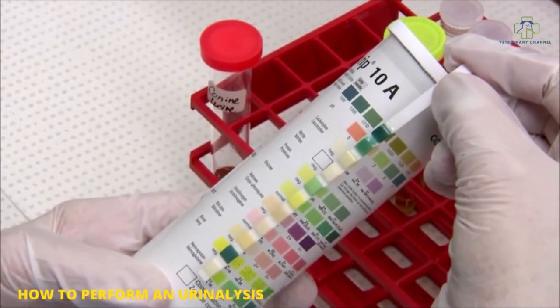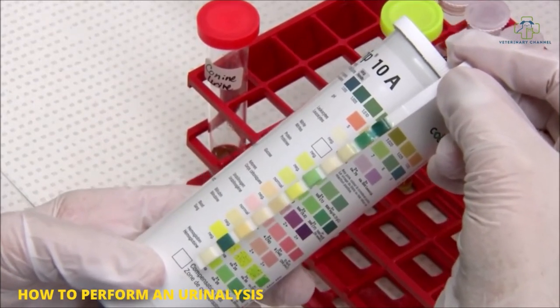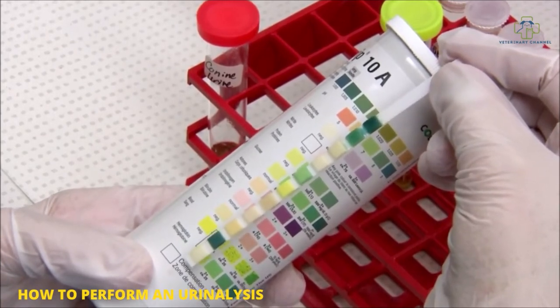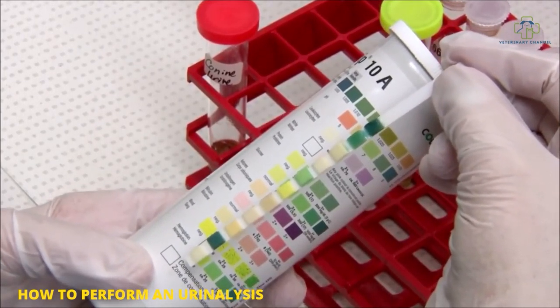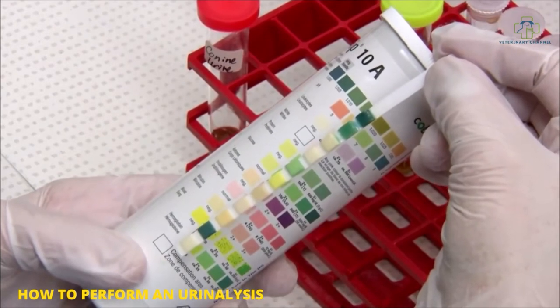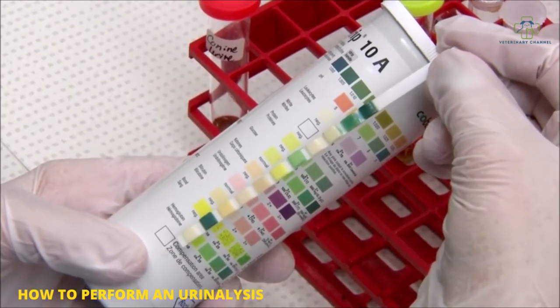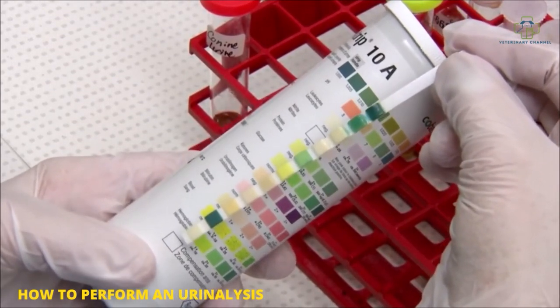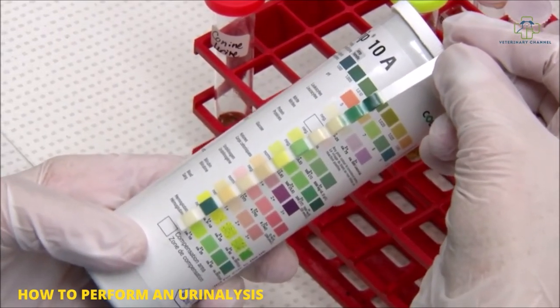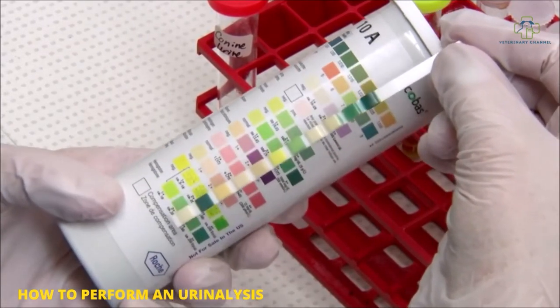We do the pH and report it as intervals of 0.5. Leukocytes is not considered significant in veterinary medicine, so we don't report that. Be aware that in cats they excrete an esterase, so this is always going to be positive in cats. Nitrites again is not considered important in veterinary medicine, so we don't report it. Protein is reported as negative, trace, and up to three plus. Glucose is the next square and is reported as negative and up to three plus as well.